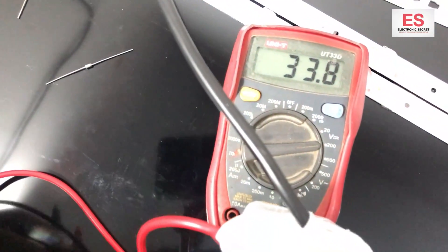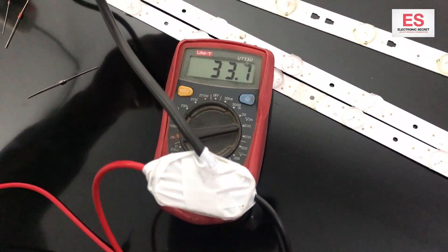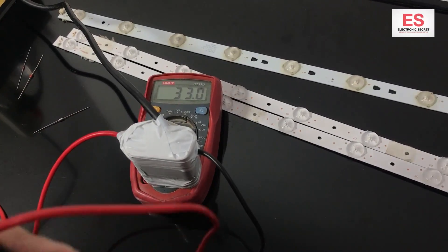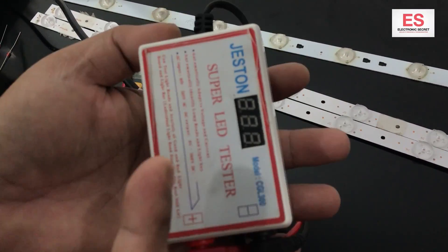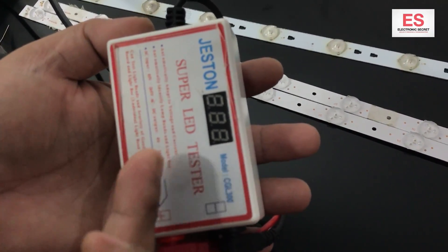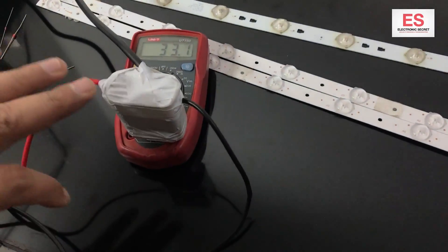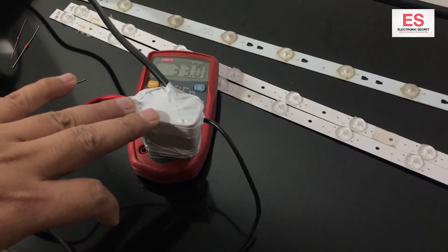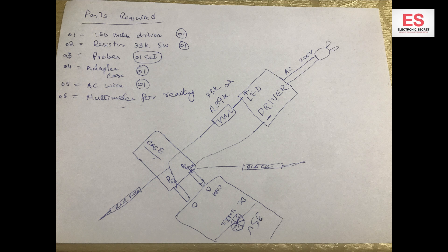So I have explained all the methods of checking backlight strips, bulb strips, and you can easily make it instead of buying the original backlight tester. This is a diagram of the backlight tester. Hope you have enjoyed it, kindly share it with your friends and subscribe my channel. Thank you friend.